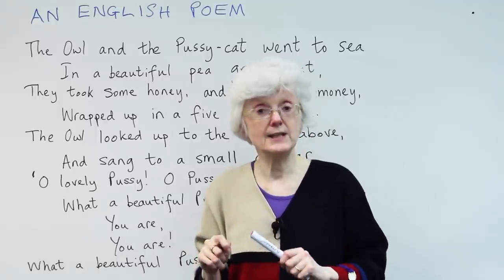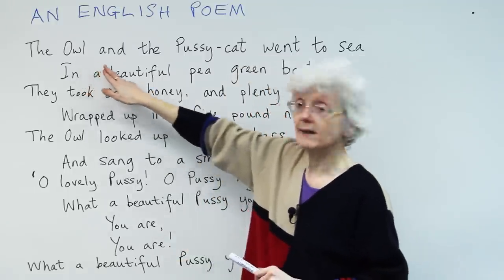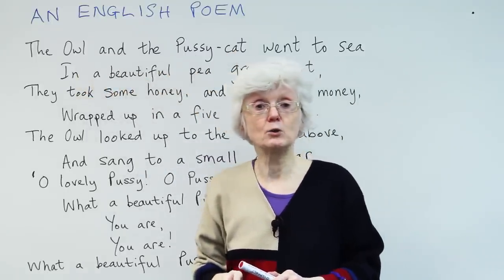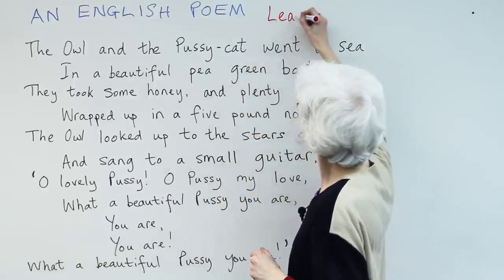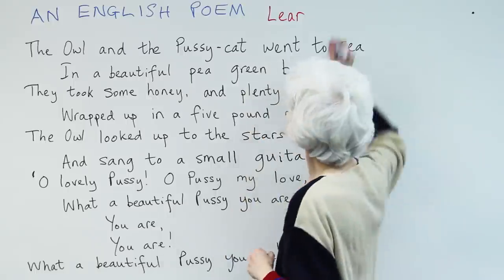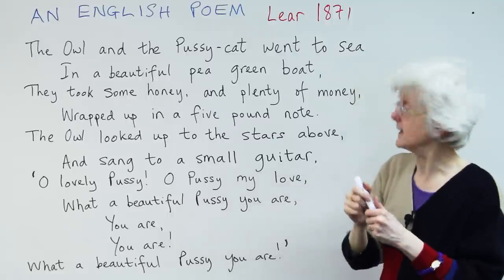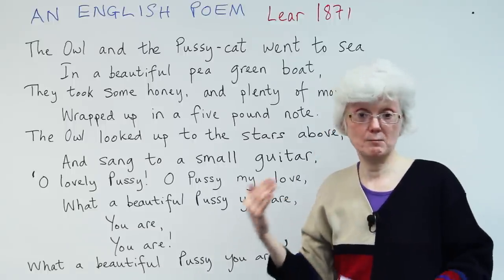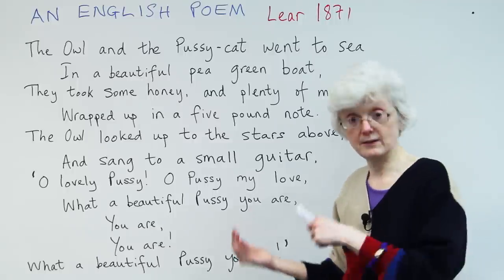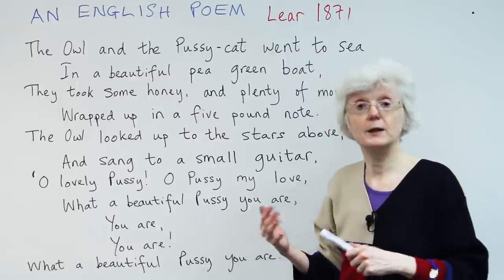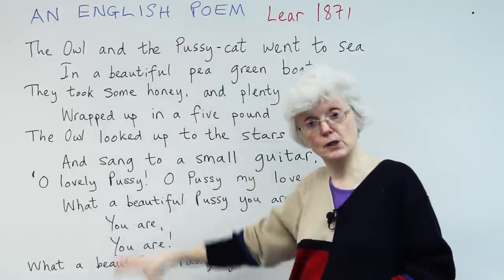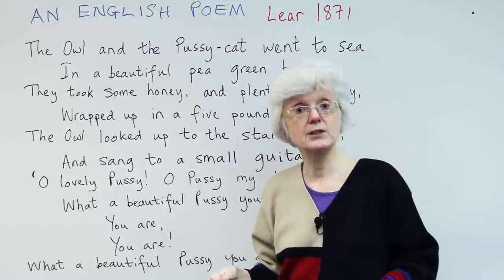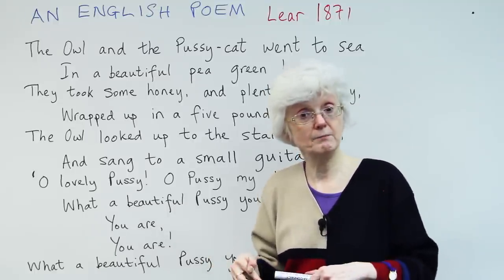I've chosen quite an easy, straightforward one. It's called The Owl and the Pussycat, which is in the first line here, and it was written by a poet called Edward Lear in 1871. Edward Lear was well known for his humorous writing, so a lot of his writing is funny — it makes you smile, it makes you laugh. So hopefully this poem will do that for you. It tells a story and it's in three sections. This is the first of three sections. I'm just going to go through it with you and explain any words that I think need explaining.